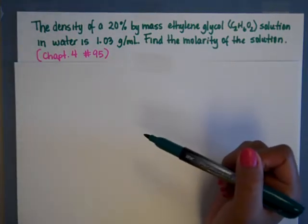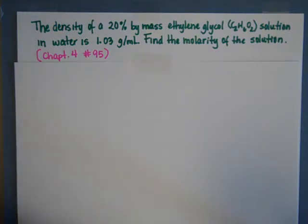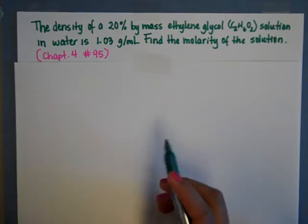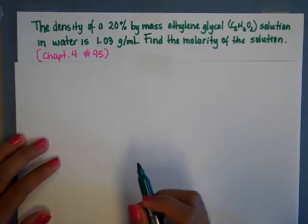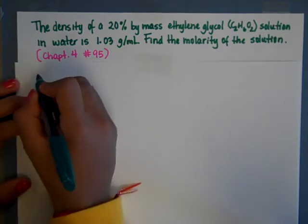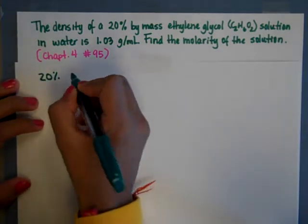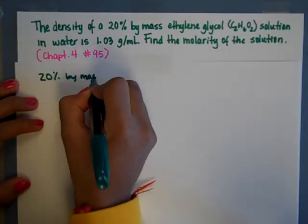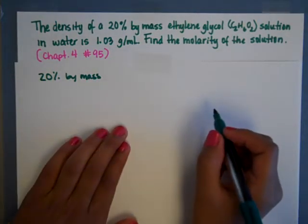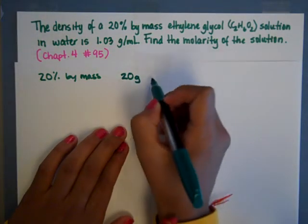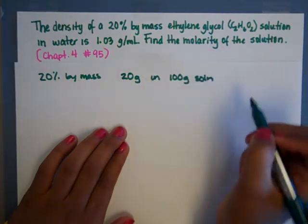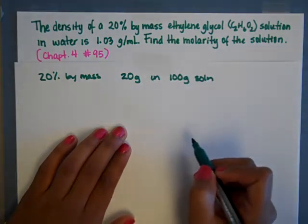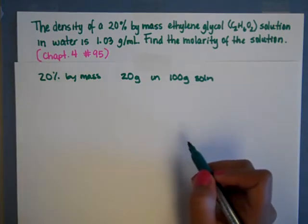And this is really incorporating two aspects, density and molarity. So we're going to start with what we're given. We're given 20% by mass of ethylene glycol. So if you remember from empirical formulas, we can convert 20% by mass if we assume 100 grams into grams. So we're going to get 20 grams in a 100 gram solution. So that's our first conversion of something we are given.